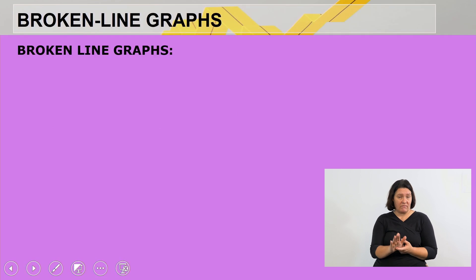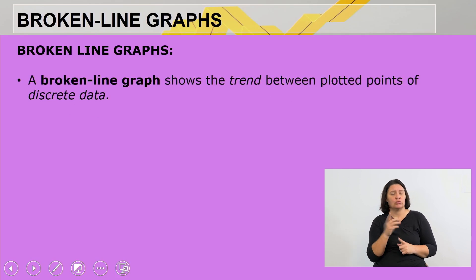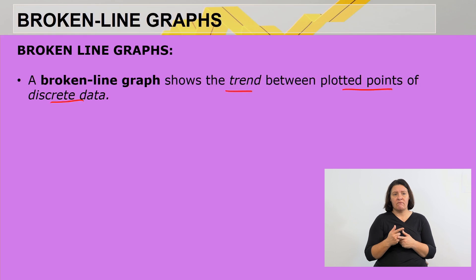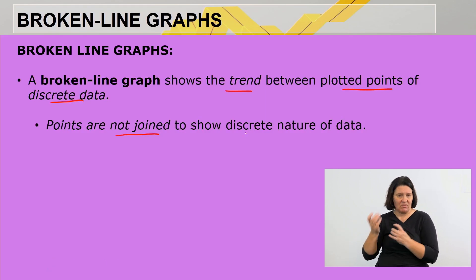Let us look at broken-line graphs. A broken line graph shows the trend between plotted points of discrete data. Remember when we work with line graphs we work with continuous data. Now we work with discrete data. The points are not joined to show the discrete nature of the data.